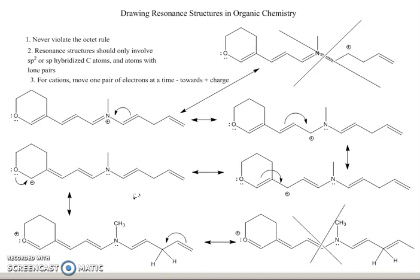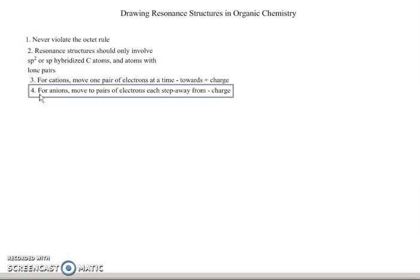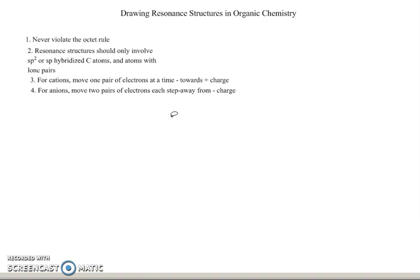I also want to talk about looking at resonance structures when we have an anion. The rules for an anion are going to be similar to those for a cation — in fact, the first two rules will be the same. Except for anions, we move two pairs of electrons each step, and we move away from the negative charge. It makes sense that we move electrons towards a positive charge and away from a negative charge.